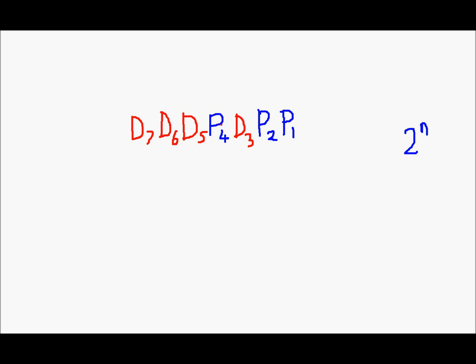Let's say we want to construct the Hamming code for 1, 0, 1, and 1. I have written these bits in the place of data bits. Next we need the parity bits. The parity bit p1 is set in such a way that even parity is established for the bits p1, d3, d5, and d7.